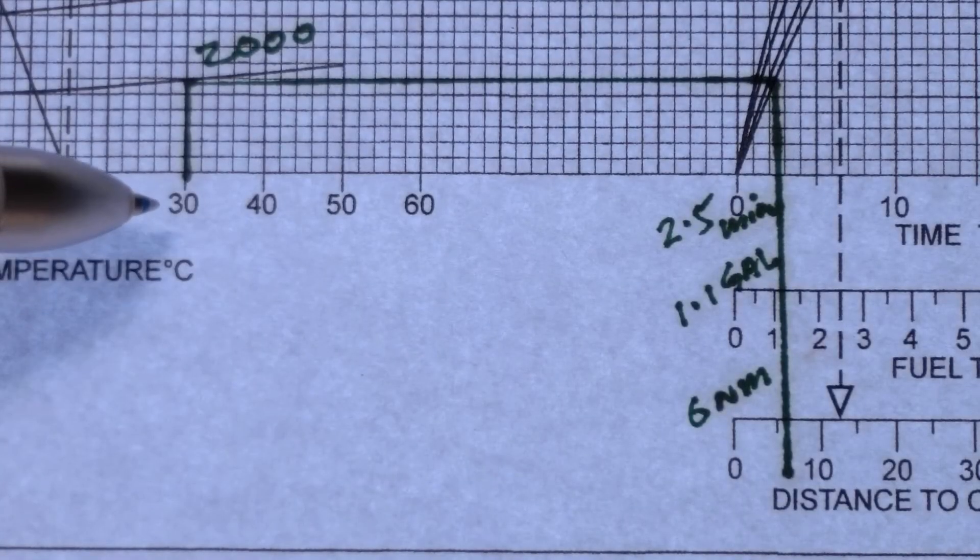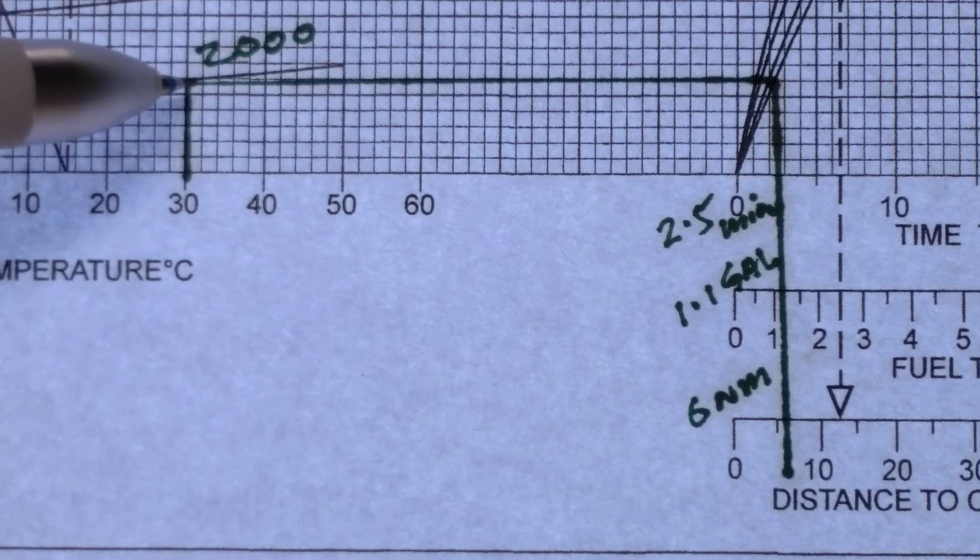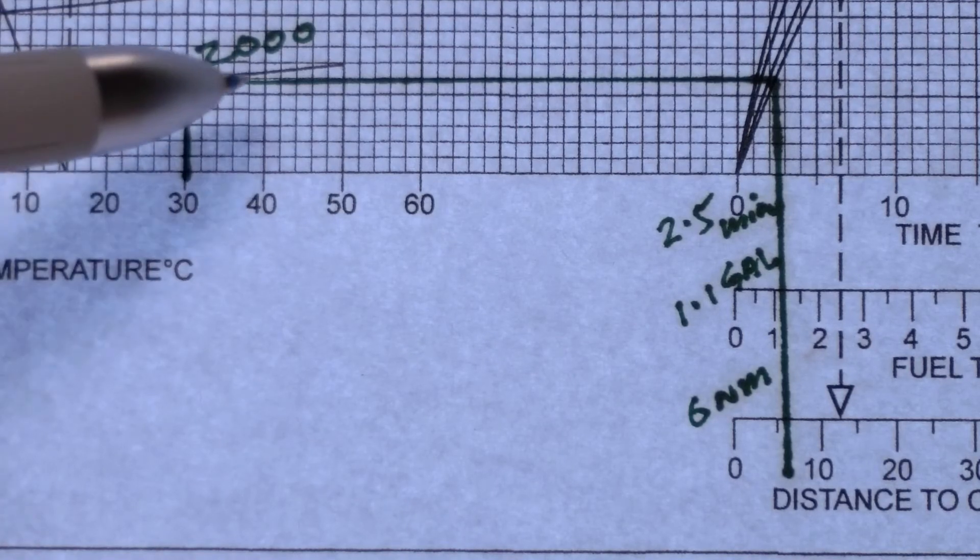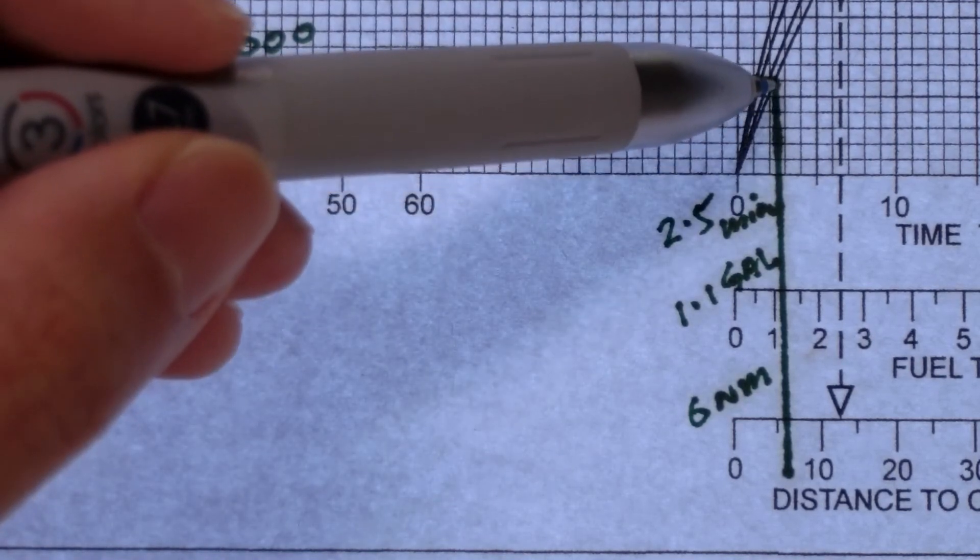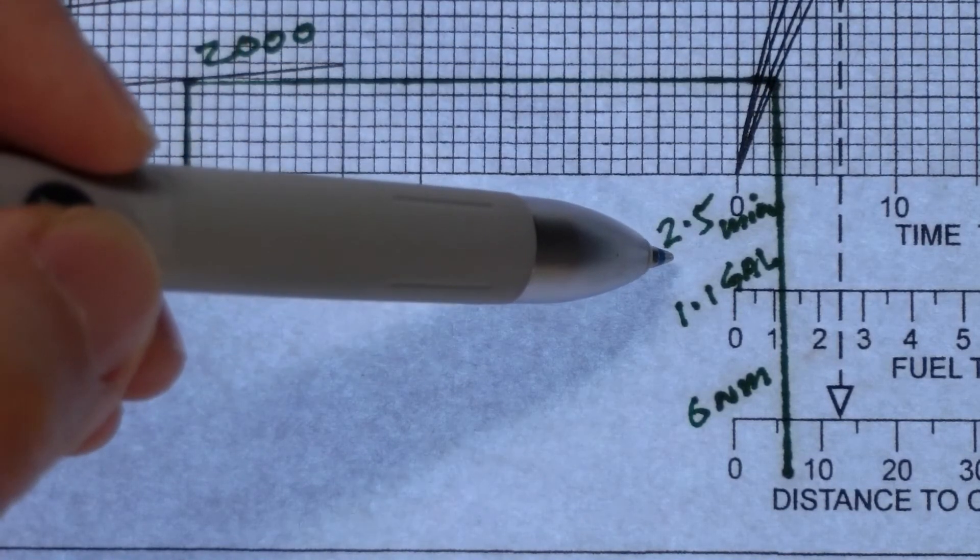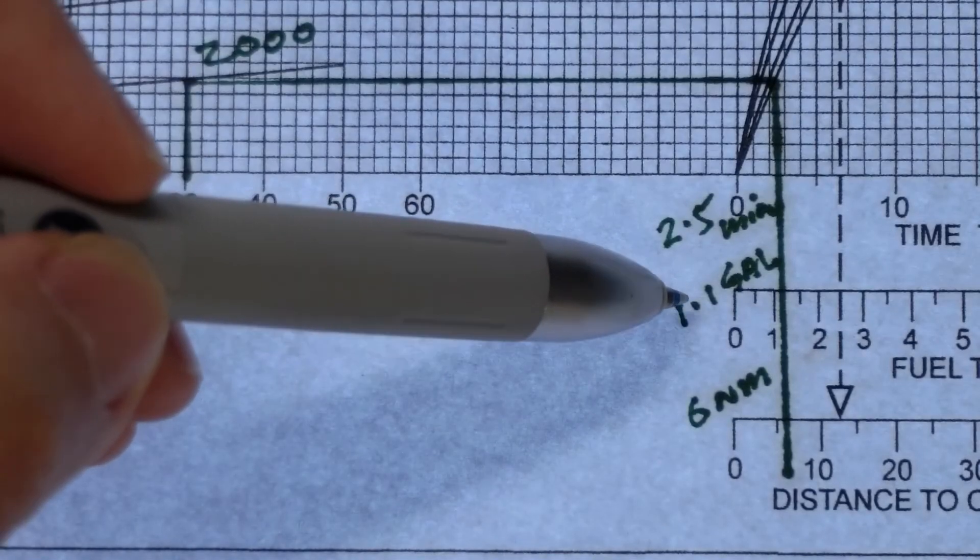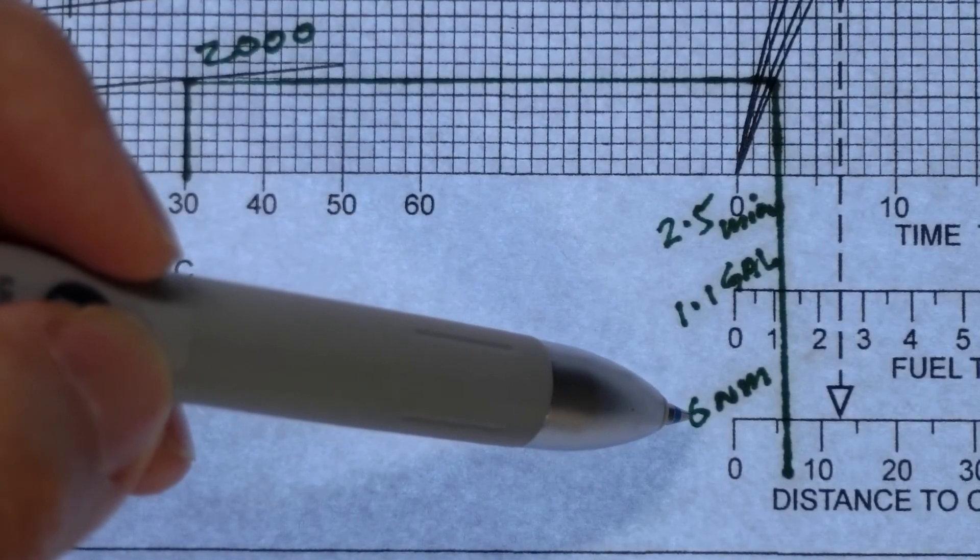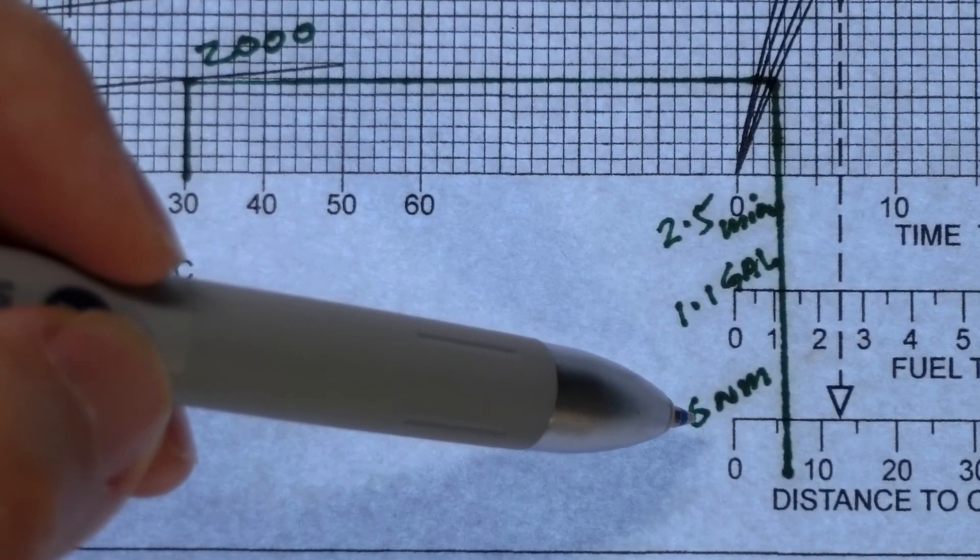So climbing from sea level to an altitude of 2,000 feet with a maximum takeoff mass of 3,650 pounds takes us 2.5 minutes, 1.1 gallons of fuel and covers a distance of 6 nautical miles.